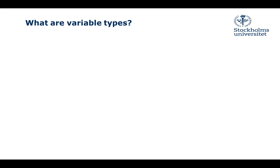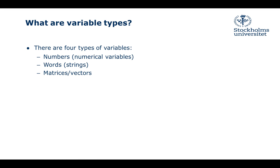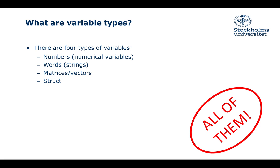What are variable types? There are four types of variables: numbers, words or strings, matrices or vectors, and structs. You may ask which we're going to use in our example. We're going to use all of them.